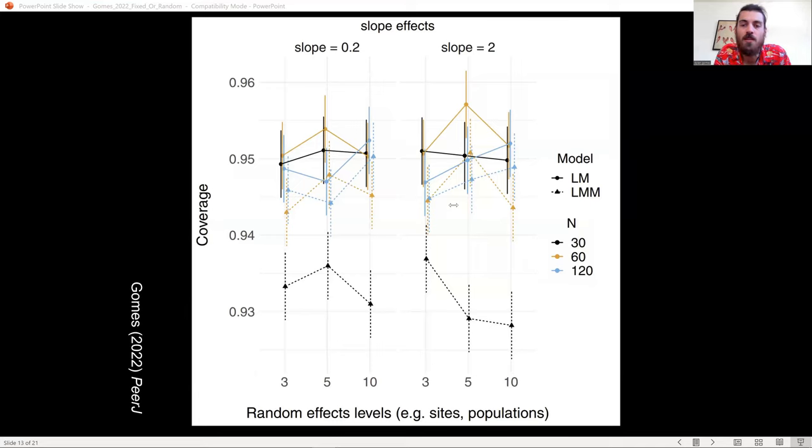One important way to assess fixed effects estimates is by looking at coverage. Coverage tells you what proportion of the simulated data sets and corresponding models included the true value within the estimated 95% confidence intervals. So, we typically expect this number to be around 0.95 if the model is correctly identifying your coefficients.